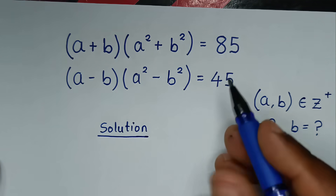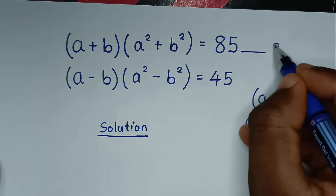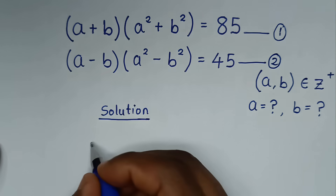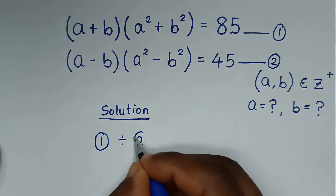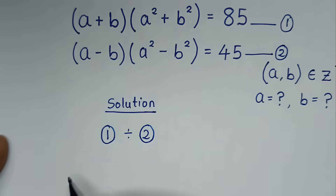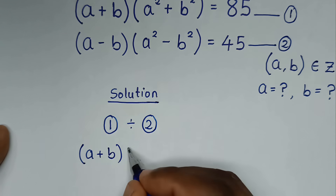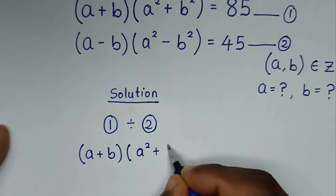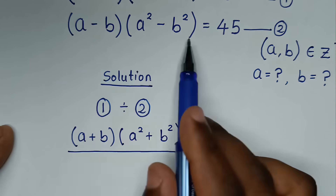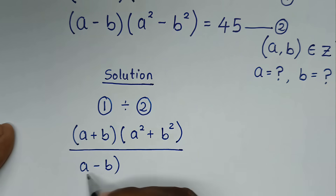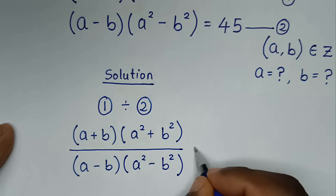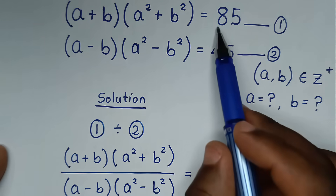From this problem, we have equation 1 and equation 2. In the first step, we'll take equation 1 divided by equation 2. From equation 1 on the left side: (a + b)(a² + b²), over equation 2 on the left side: (a - b)(a² - b²), is equal to 85 over 45.